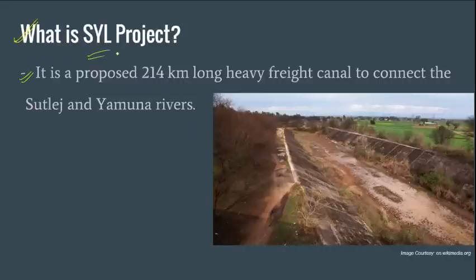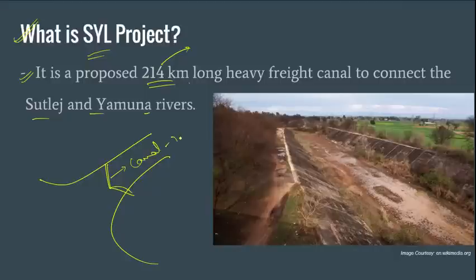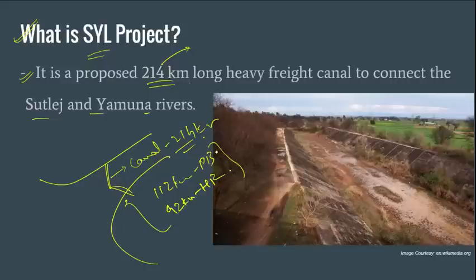So what is this project? Basically the Satluj Yamuna Link is a 214 km long canal which is proposed to link the Satluj and Yamuna rivers. You have the Satluj river and the Yamuna river, and you are trying to connect these two rivers with a 214 km canal. Out of this 214 km, 112 km lies in Punjab and around 92 km lies in Haryana. So this is passing through two states, and that is what the controversy is.